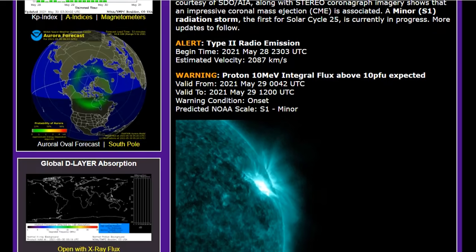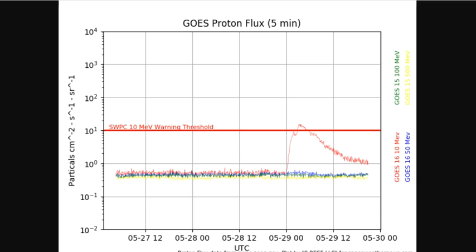A minor S1 radiation storm, the first of Solar Cycle 25, did occur about 12 hours ago. There it is above the line, the threshold.